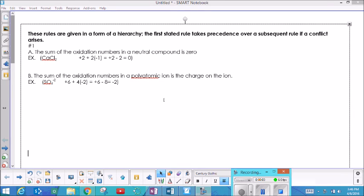These are the rules for determining the oxidation numbers for a particular element. These rules are given in the form of a hierarchy, which means rule number one takes precedence over subsequent rules if there are conflicts that arise in a problem. So that's only an issue if more than one rule is playing a role.